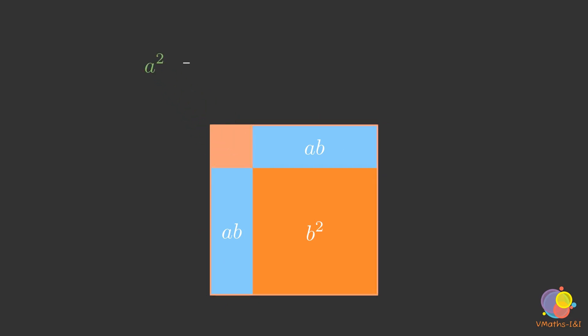So the area of the original square is equal to the sum of the areas of the four divided shapes. That is why we have the following identity.